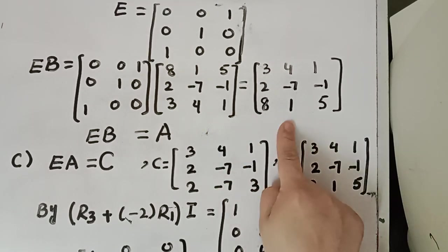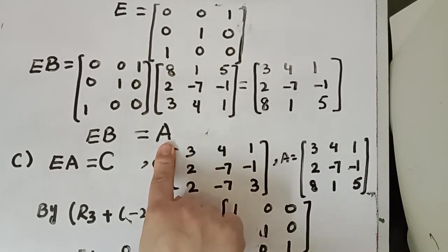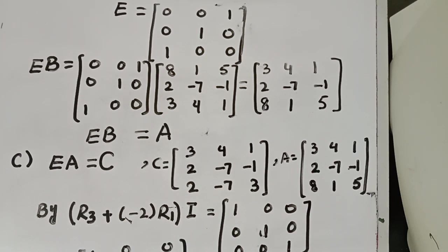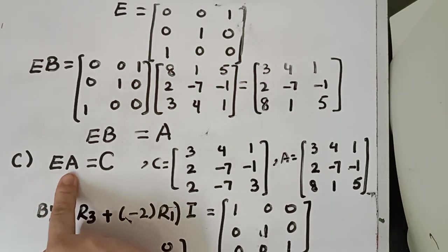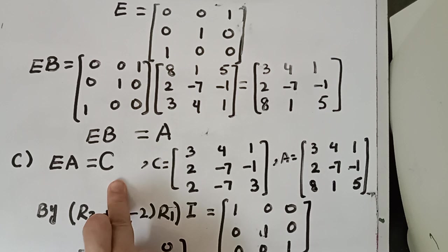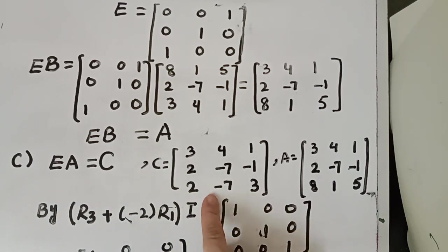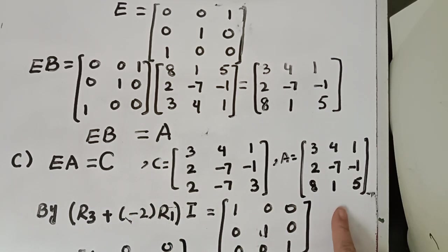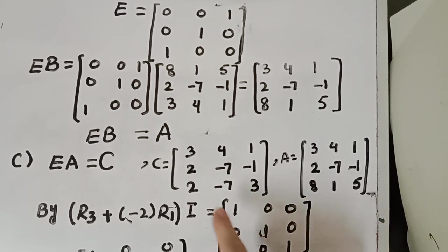We have performed the product and the resultant matrix A has come to us. In part C, you will find the elementary matrix and the equation where matrix multiplication with A gives the resultant matrix C. The matrix is given and the entries are written in A. Now let us relate A matrix and C matrix.